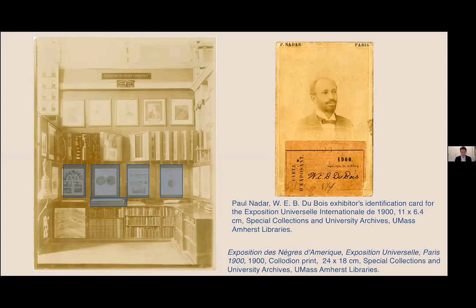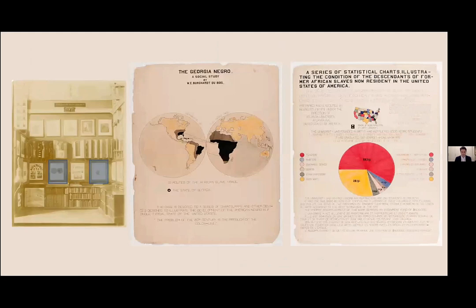Du Bois's contribution to the American Negro Exhibit was as uncompromising as it was subversive. He and his student collaborators at Atlanta University not only created over 60 data visualizations charting the daily lived experience of Black America, they also compiled a rich collection of photographs of Black Americans, as well as a 400-page handwritten transcription of the Black Codes of Georgia, tracing a genealogy of legal oppression within the state for over a century and a half. Du Bois and his students presented two sets of data: the Georgia Negro, a social study — a detailed case study illustrating progress made by Black Americans over the past 35 years in the state — and a broader national survey. While distinct, there were frequent overlaps between the two series.